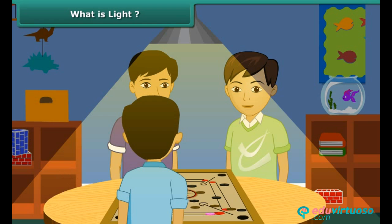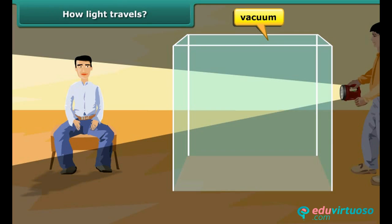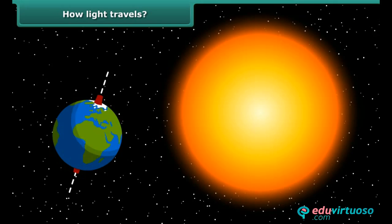Do you know that light is a form of energy just like sound but still different from it? We know that sound cannot travel in vacuum. However, light can travel through a vacuum. That is how the light from the sun reaches our planet Earth.